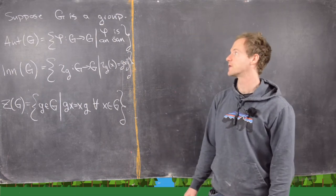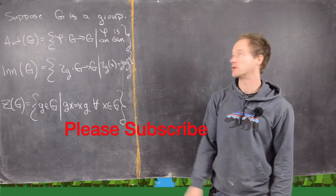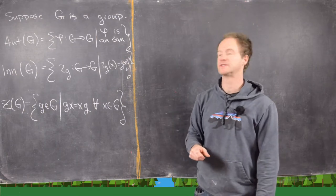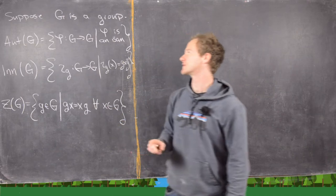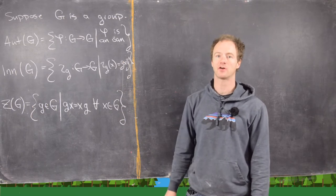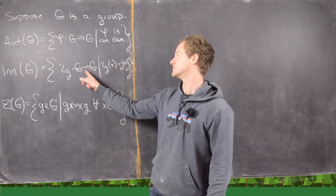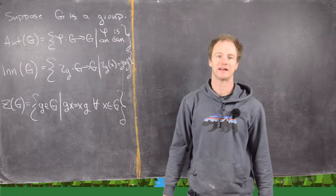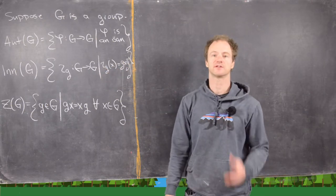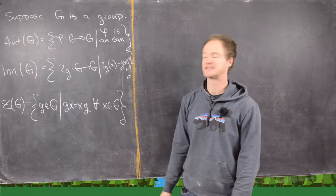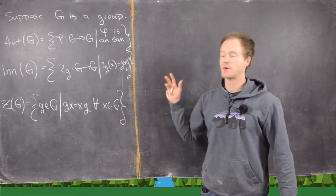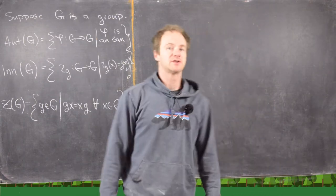In this video we're going to look at a result in elementary group theory that ties together three following notions. We want to start with just any arbitrary group G. We want to consider the group of automorphisms of G — isomorphisms from G to G. Then we want to look at the subgroup of inner automorphisms of G: those are automorphisms from G to G defined by conjugation by a single element, i.e., ιG(x) = GxG⁻¹. And then the center of G, which are all elements that commute with every other element of G.